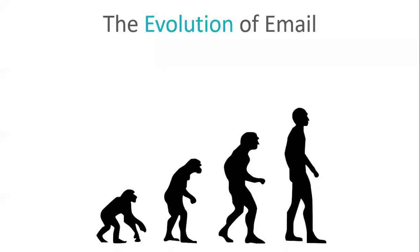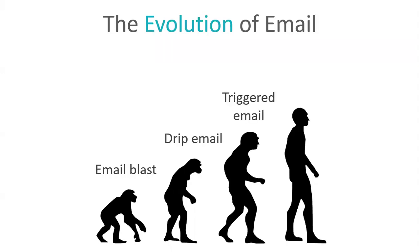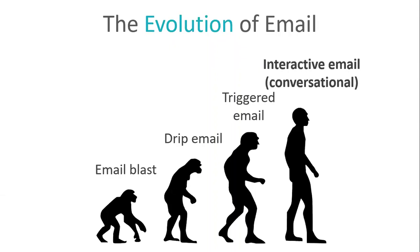What are conversational emails? If we look at the evolution of email: we started out with the email blast — a very simple one-to-many email — followed by drip emails, which were timed emails. Then we went to triggered emails, which are triggered based on behaviors or engagement. Today we have artificial intelligence, which actually allows us to send interactive or conversational emails, where you can send an email to a lead and an automated system can actually respond to that email.